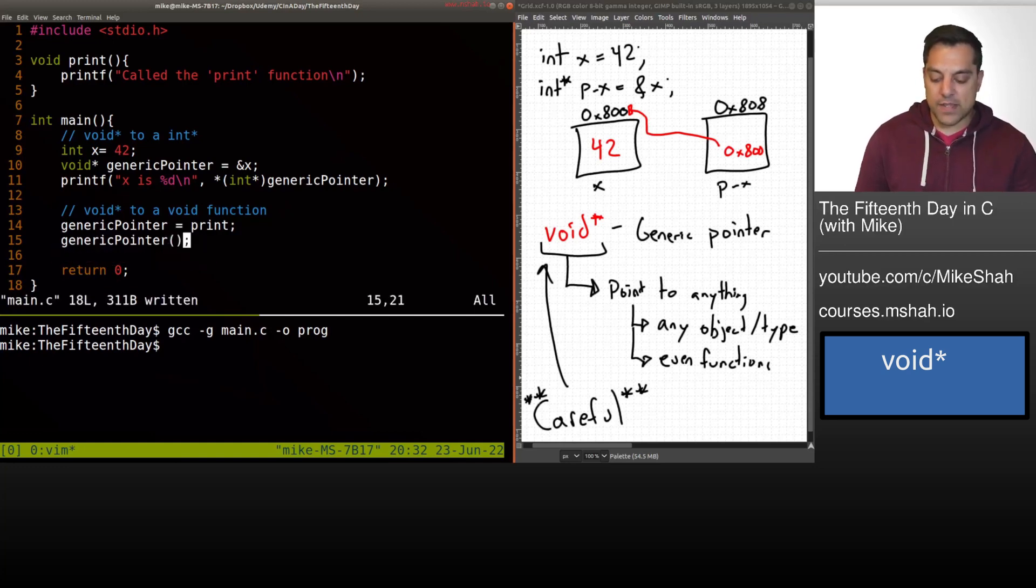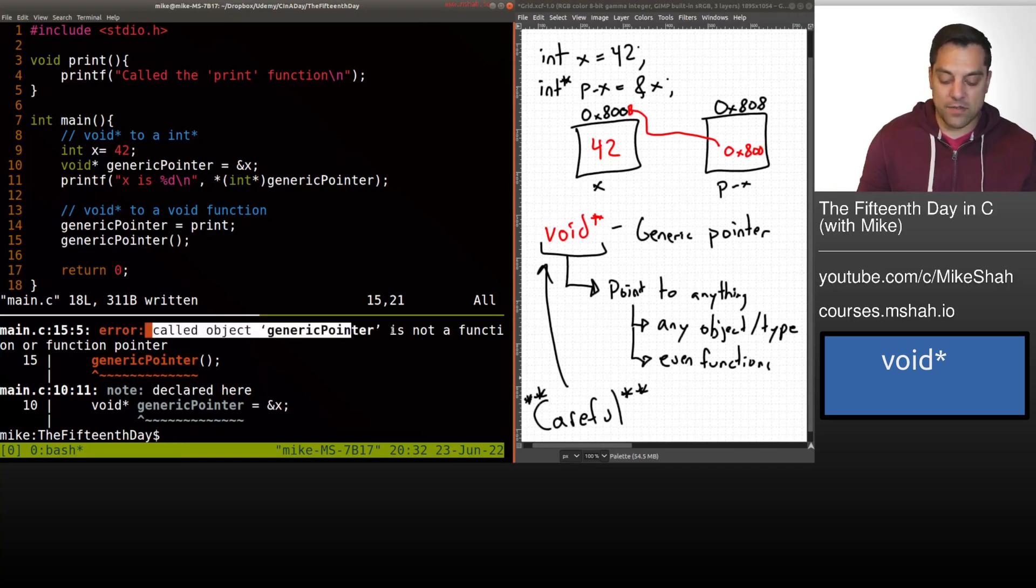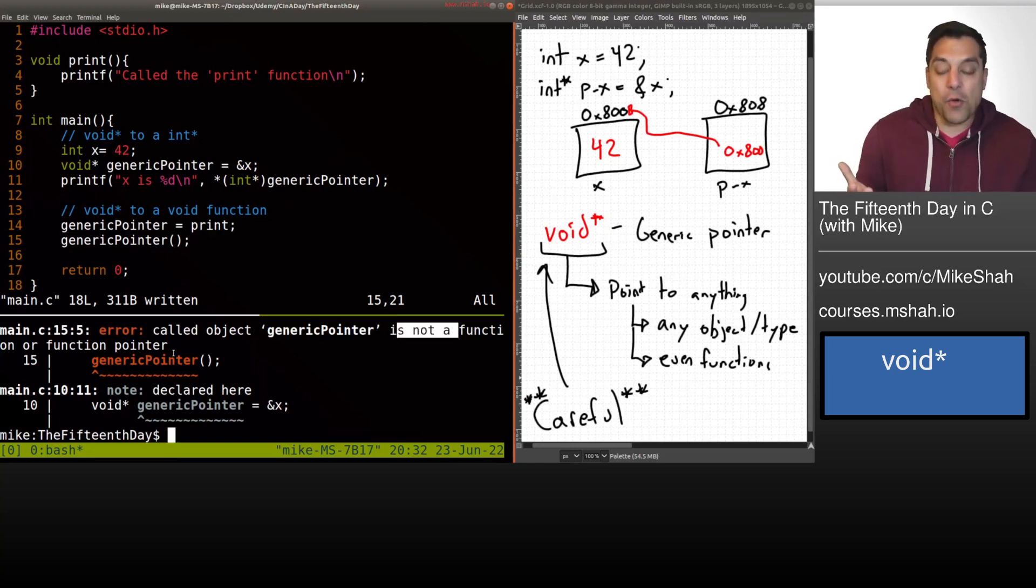And let's see if I can just call this or how would I actually use this. So if I just tried something like generic function here, well, it's going to give me again, a bunch of sort of errors here, it's going to say a error called on this object generic function, generic pointer, the name of our variable here, it's gonna say it's not a function or function pointer, because again, it doesn't know anything about this particular data. It's just void, it doesn't have a particular data type.